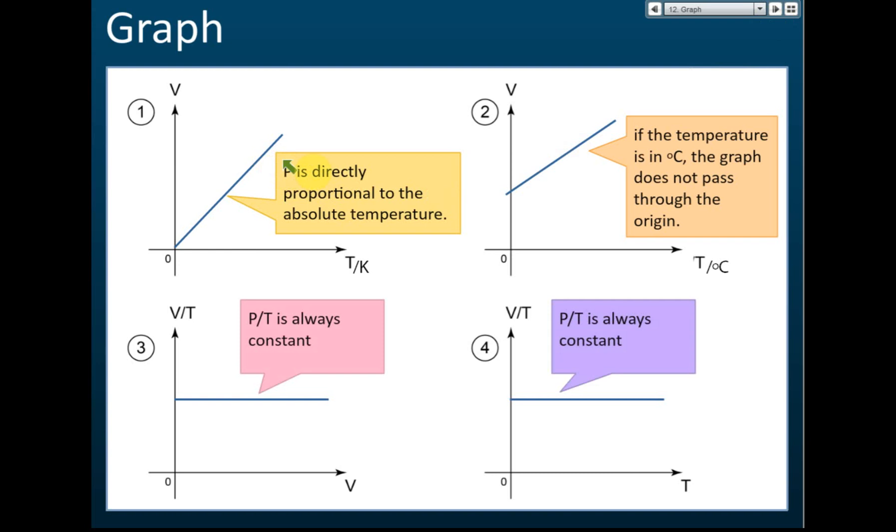So directly proportional - if it's degrees Celsius it does not pass through the origin. This is V over T here, not P over T. V over T - let me use a black color - this is V over T, which is always a constant.